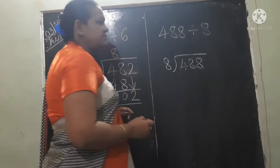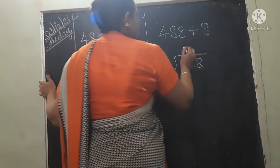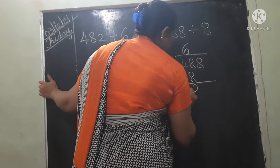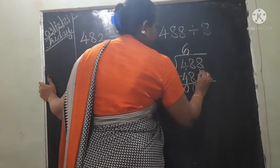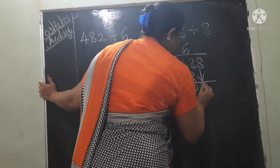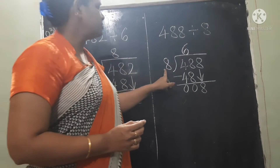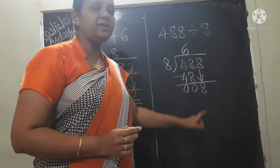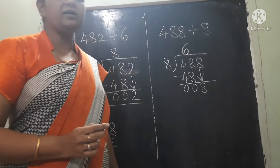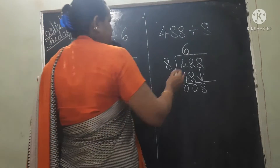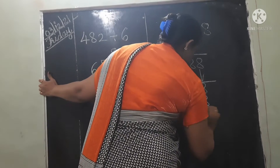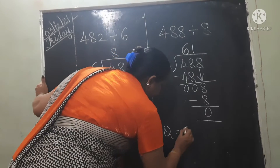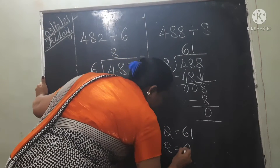In the 8 times table, 48 is in which place? 6 eights are 48. But we are having another number, so this number we have to carry down. Now look here — both numbers are the same: 8 and 8. So 8 will come in the 8 place — 1 eight is 8. So our remainder is 0. The quotient is 61, remainder 0.